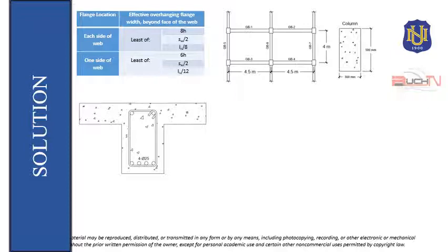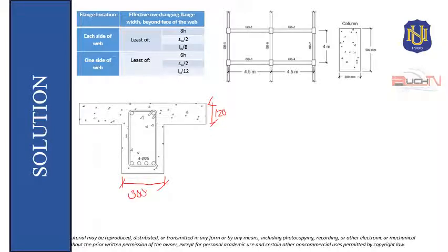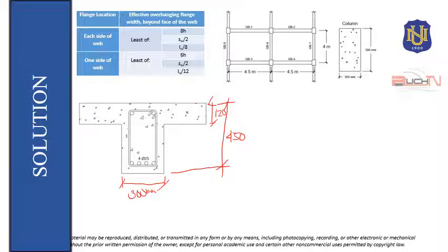The slab thickness is 120mm on both sides, the base of the beam B_w is 300mm, and the total height H is 450mm. We first find B_f or the effective flange width B_e using the table from the NSCP. Since we have a flange on each side of the beam, we use the lesser of 8H, SW over 2, and LN over 8.